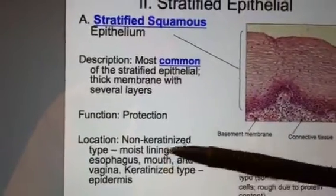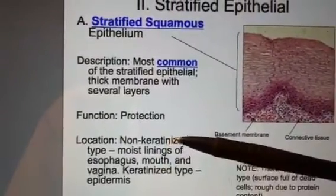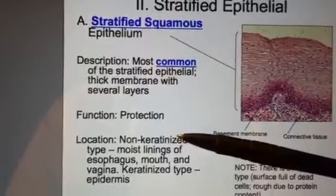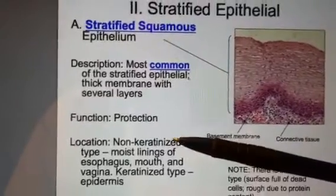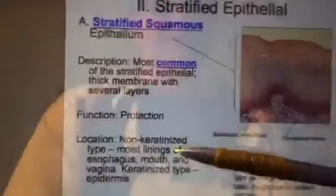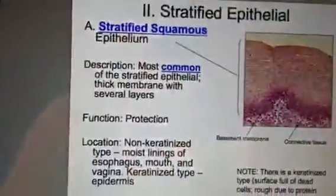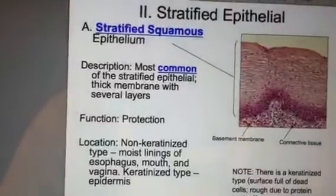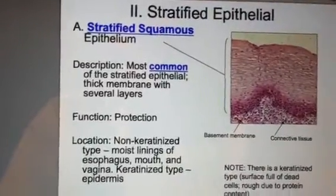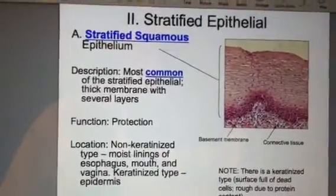There is a non-keratinized, non-tough type that's soft, and it's found in the moist linings of the esophagus, mouth, and vagina, for example.